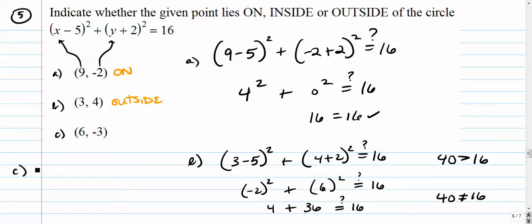Alright. Letter c. 6 minus 5 squared plus quantity negative 3 plus 2 squared. Does that equal 16? This is 1 squared. This is negative 1 squared. So that's 1 plus 1 is 2. 2 does not equal 16.